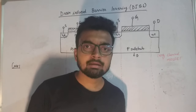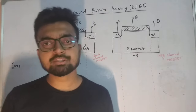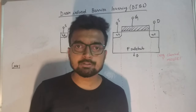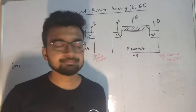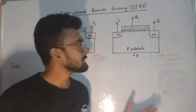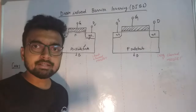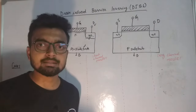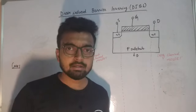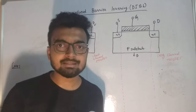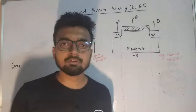Having a short channel length improves the performance and speed of operation of any device, and also reduces the cost of manufacturing. If we decrease the size of a transistor, the effective capacitance also decreases. Decreasing the effective capacitance reduces the time to charge and discharge the capacitor, which in turn increases the speed of operation.